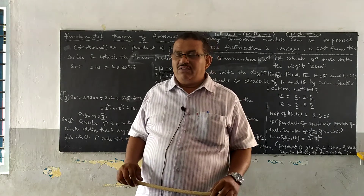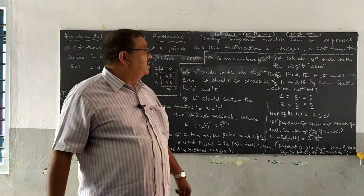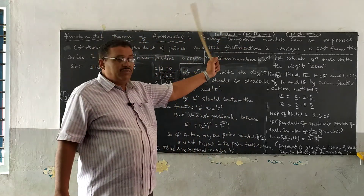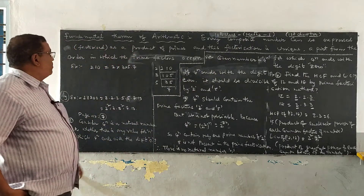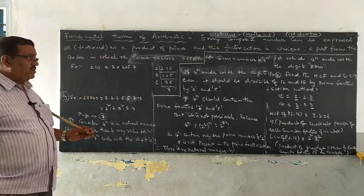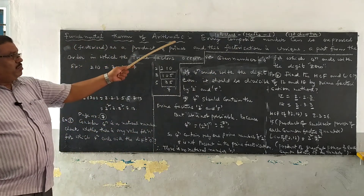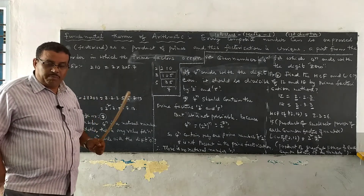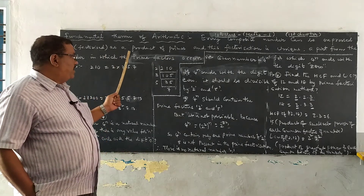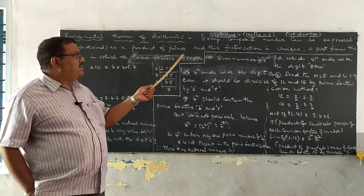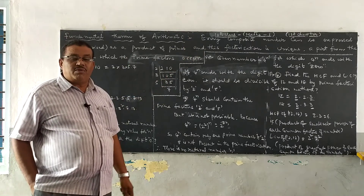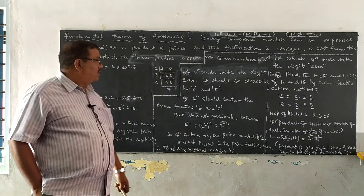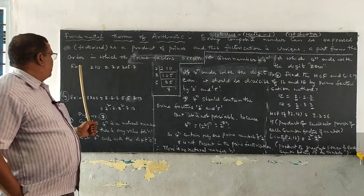Now I have to go through the 10th class mathematics paper 1, chapter 1. Let us see the Fundamental Theorem of Arithmetic. Every composite number can be expressed as a product of primes, and the prime factorization is unique apart from the order in which the factors occur.